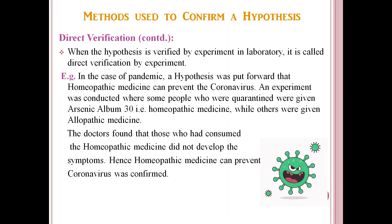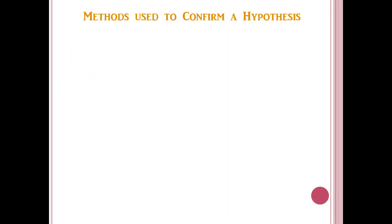The doctors found that those who had consumed the homeopathic medicine did not develop the symptoms. Hence the hypothesis that homeopathic medicine can prevent coronavirus was confirmed directly by performing an experiment.